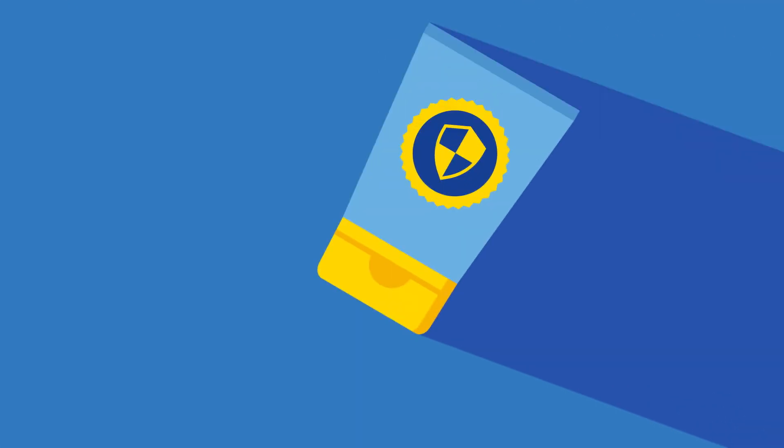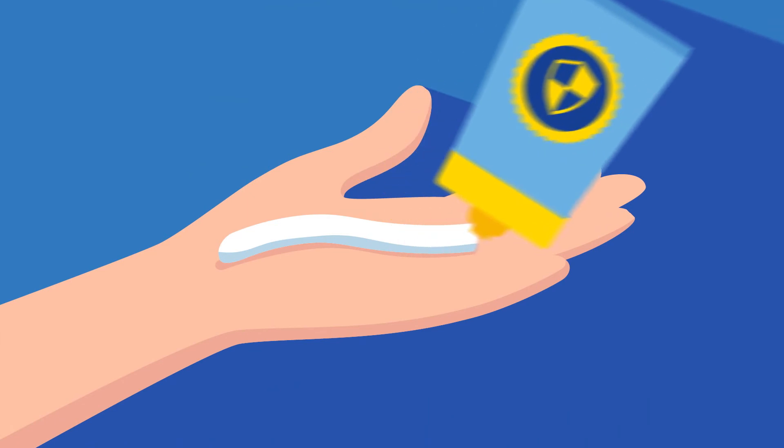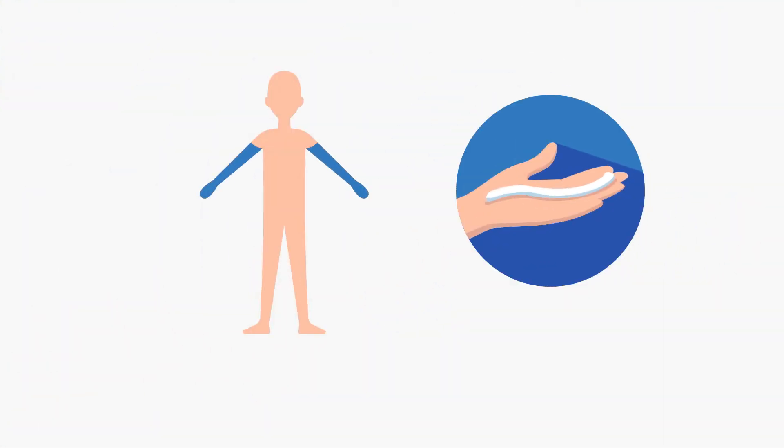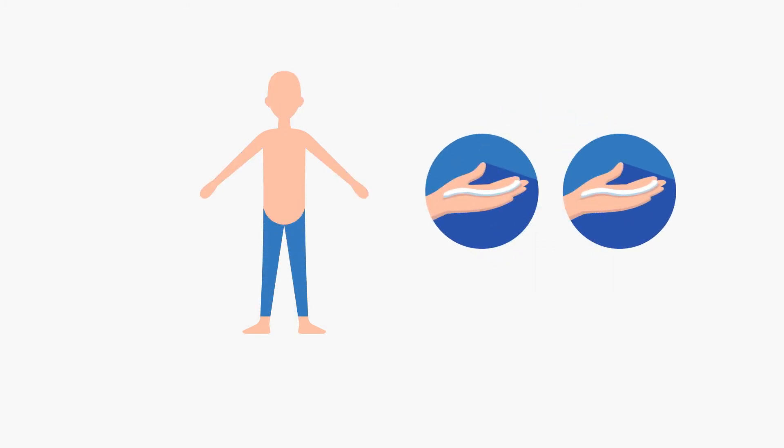That is why the right application is very important. The length of your hand will give you an idea of the right amount of sunscreen to apply. This is enough for one of your arms or for your face. And use twice this amount on each leg, the stomach area and chest, or back.